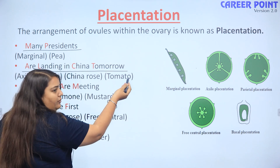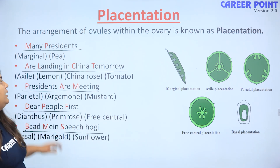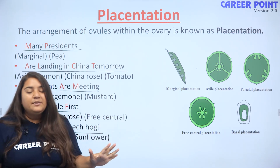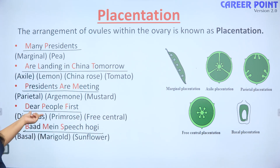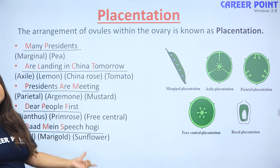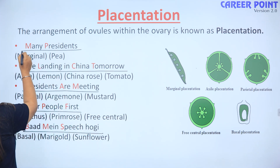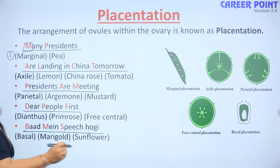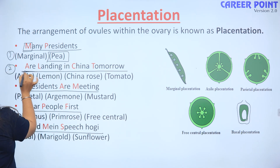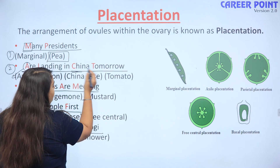Trick ke sentences: 'Many presidents are landing in China tomorrow.' And 'Presidents are meeting dear people first and badman speech hogi.' P se butter — marginal type. R se axile — which is the second type of placentation. L se lemon. C se China rose. T se tomato.